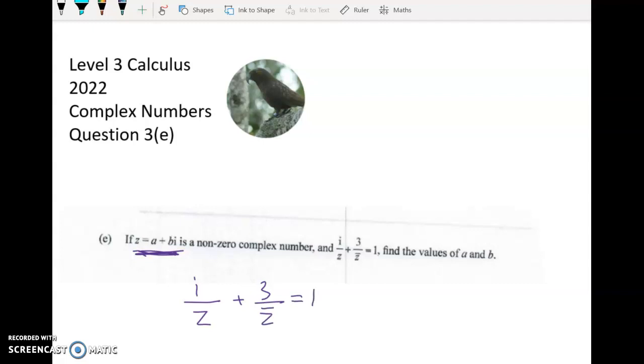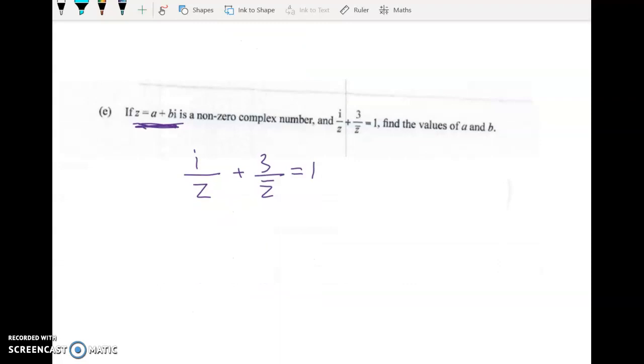Now you know usually I would just straight away substitute my a plus bi and I can do that here, but I'm just going to stop and notice here that if I add those two fractions together, the common denominator that I get is going to be nice because z times its conjugate is going to be a real number.